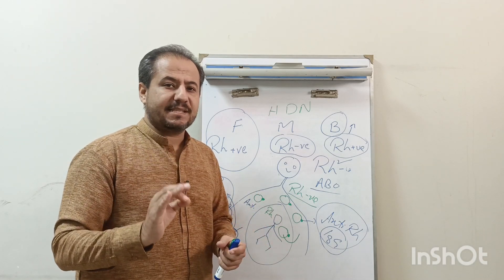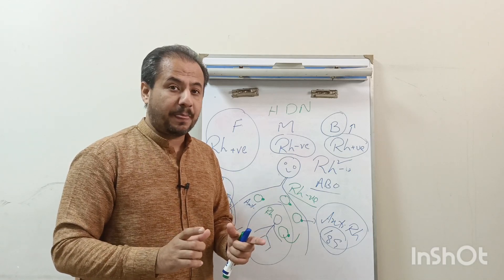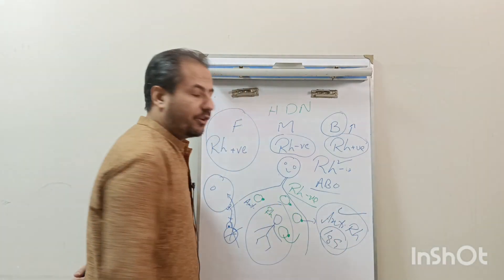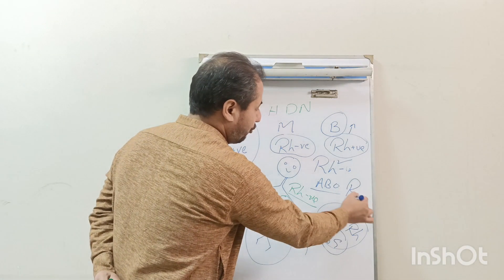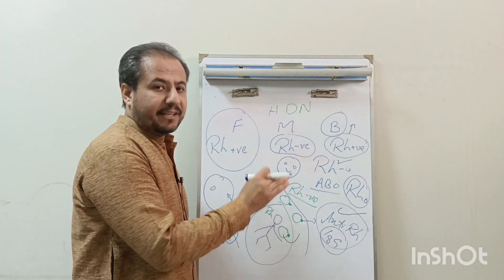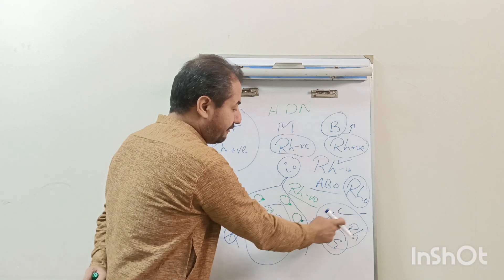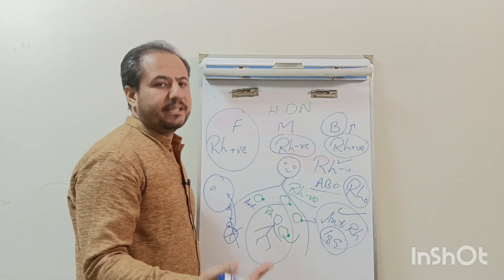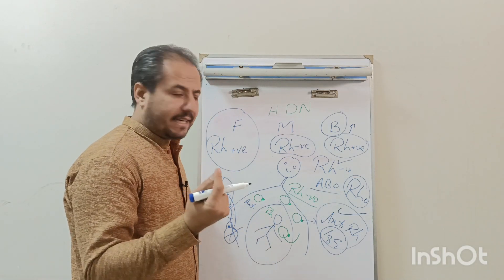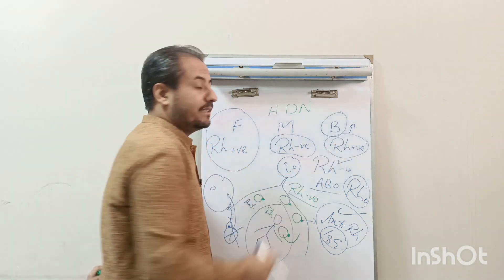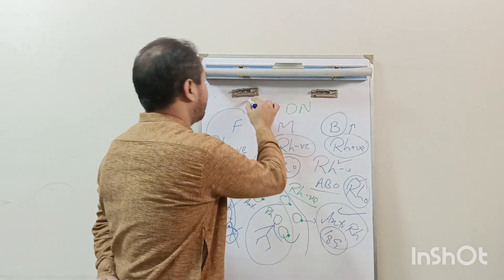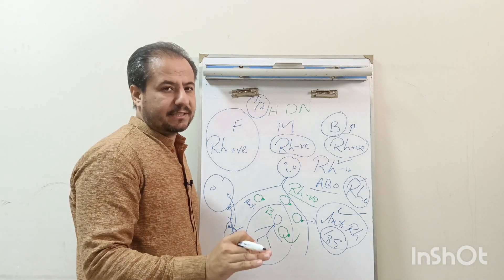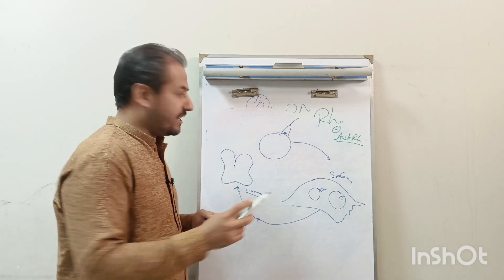The most important question is how we can prevent hemolytic disease of the newborn. We can prevent it through administration of anti-Rh antibodies, and these anti-Rh antibodies are known as RhoGAM — the name of the injection is RhoGAM. During the first pregnancy, if an Rh positive baby is delivered, you have to administer RhoGAM within 72 hours of delivery.